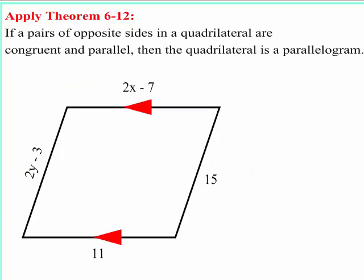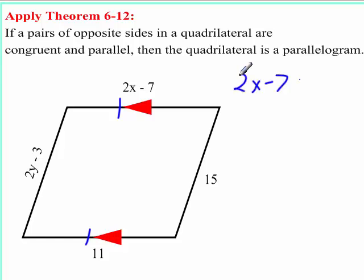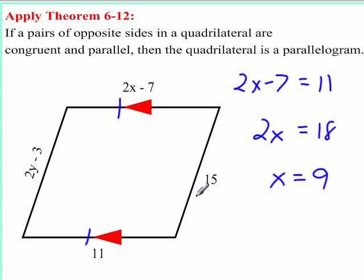Applying Theorem 6-12: we have to find a pair of opposite sides that are both congruent to each other and parallel to each other. We need to find the value of x, because this side needs to be congruent to this side for it to be a parallelogram. So 2x − 7 = 11, giving 2x = 18, so x must be 9. We don't really care at this moment what y is going to be equal to.